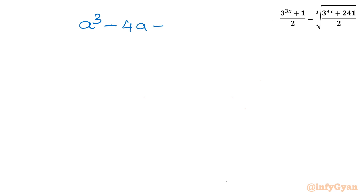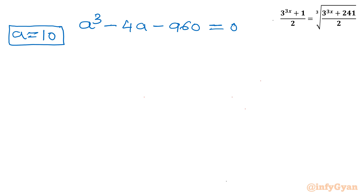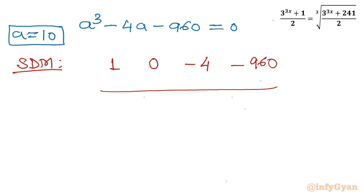Using synthetic division (SDM) with root a = 10 on coefficients 1, 0, −4, −960: bring down 1; 10×1 = 10, add to 0 gives 10; 10×10 = 100, add to −4 gives 96; 10×96 = 960, add to −960 gives 0. This yields the quotient coefficients 1, 10, 96.